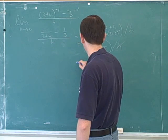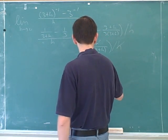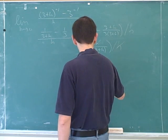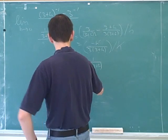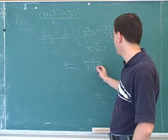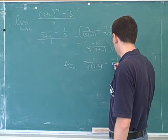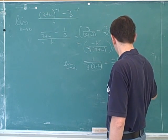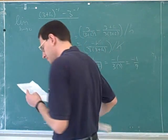And then you cancel the h's. Yes. That gives you negative 1 over 3 times 3 plus h. And you wanted to find the limit of that. So this is a continuous function now. And you can just plug in 0. So you get negative 1 over 3 times 3. Negative 1 ninth? Perfect. Yes. Okay. Alright. So the next one.